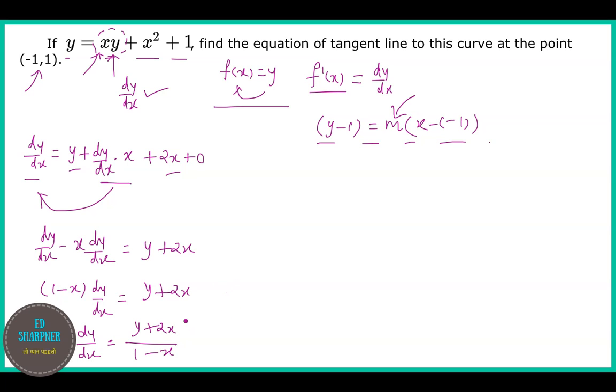Now we have to put (-1, 1) in this expression to get the value of dy/dx at (-1, 1), which is nothing but (1 - 2) divided by (1 - (-1)), which gives -0.5.